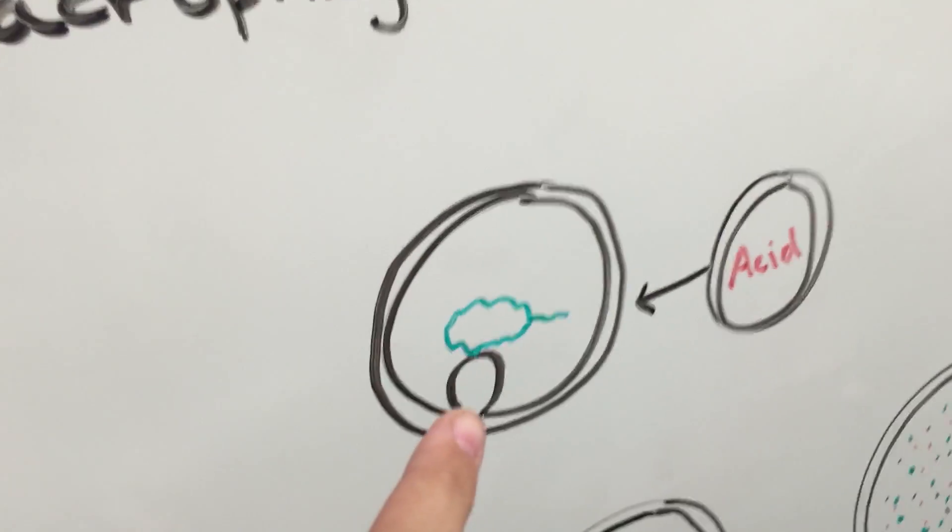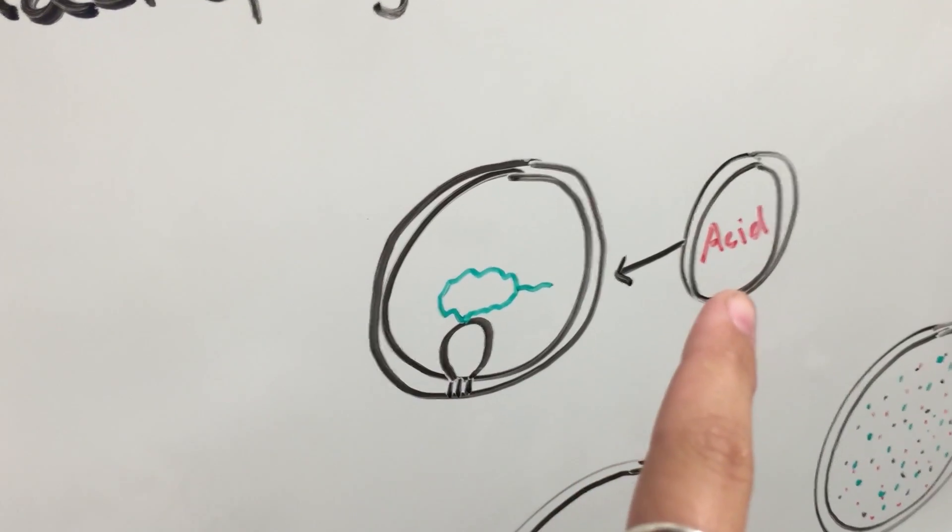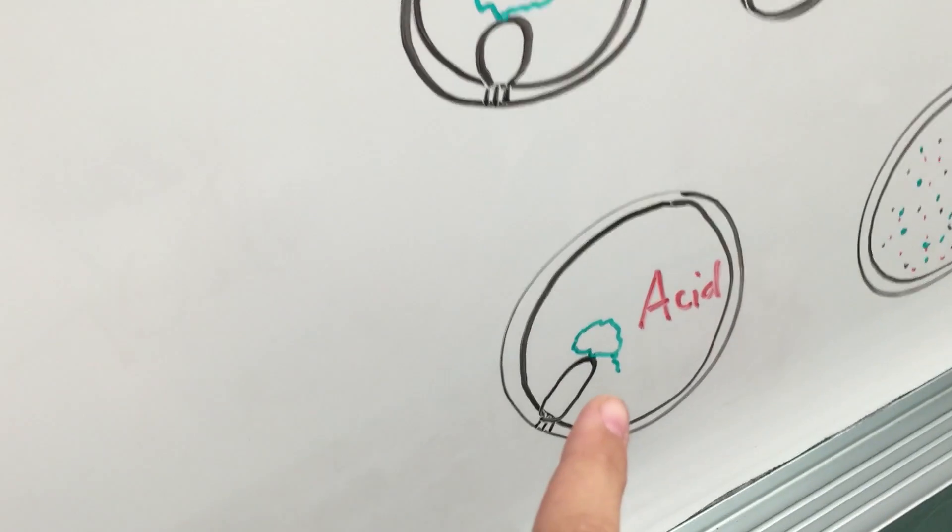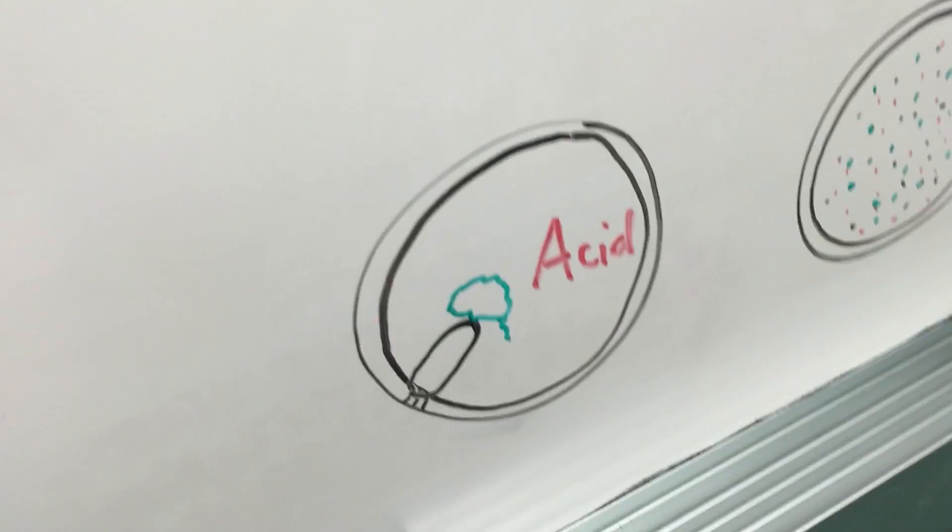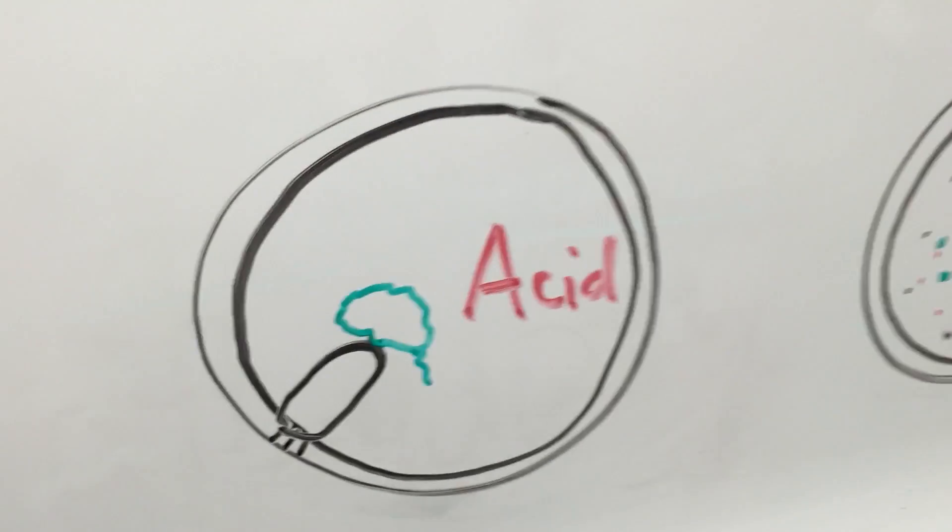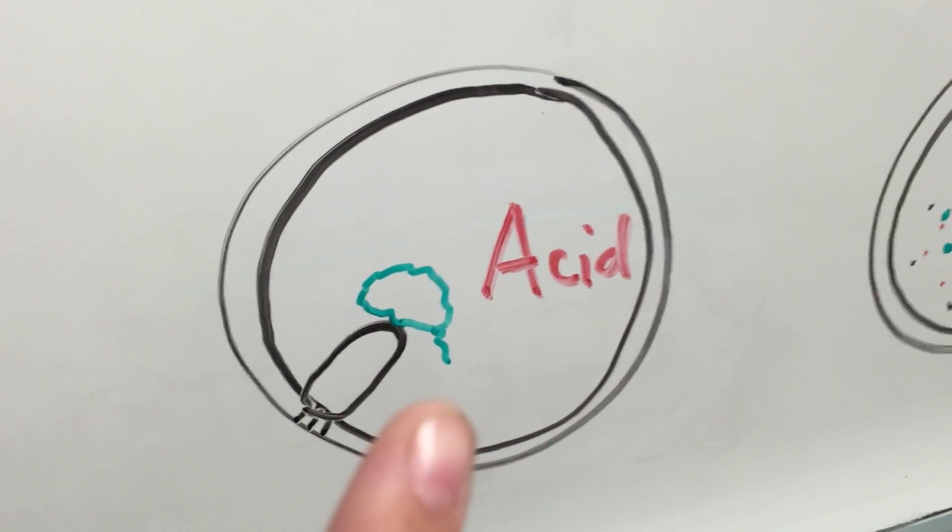These little pockets filled with acid, called lysosomes, combine with the phagosome, forming one big pocket called a phagolysosome, which contains acid, the pathogen, and the receptor.